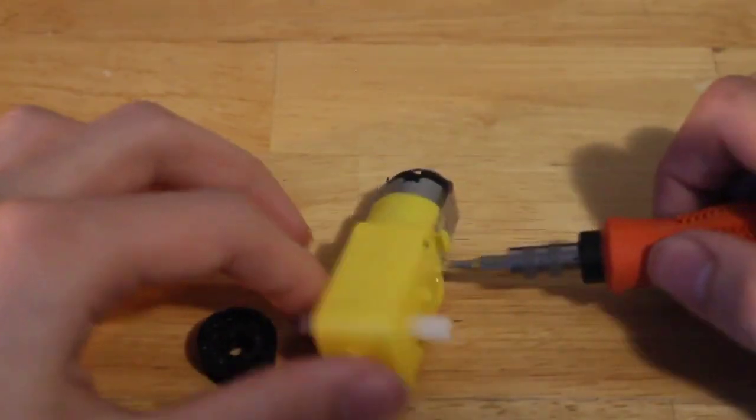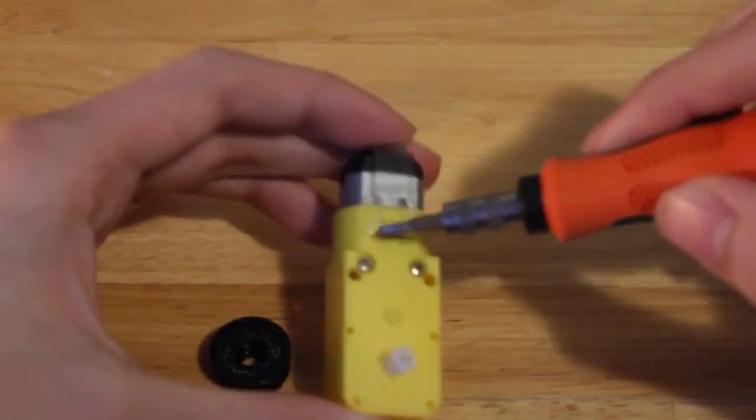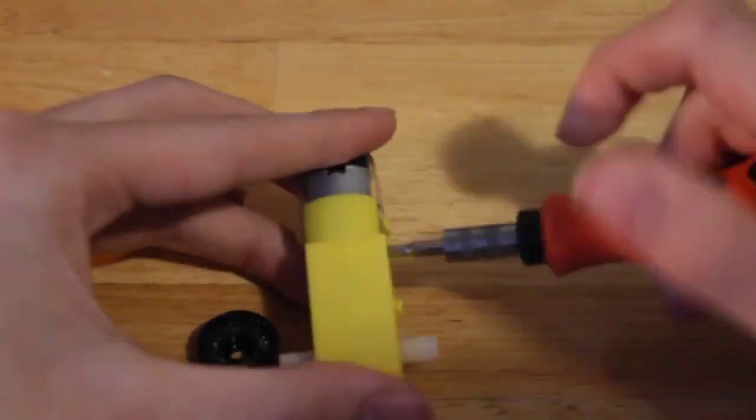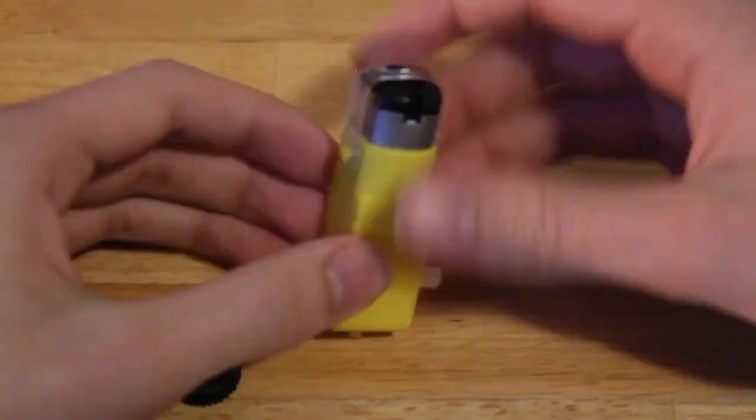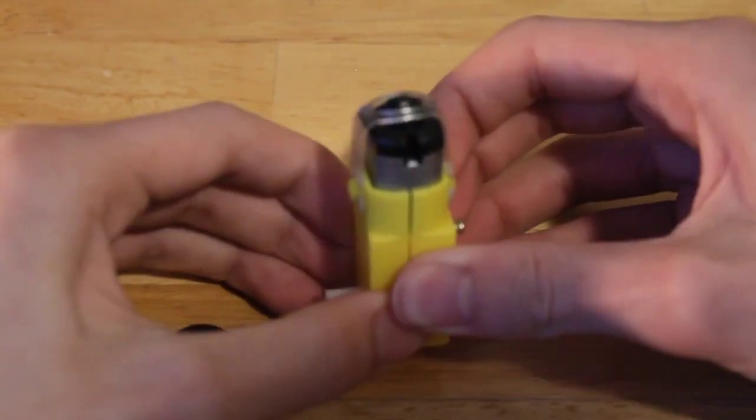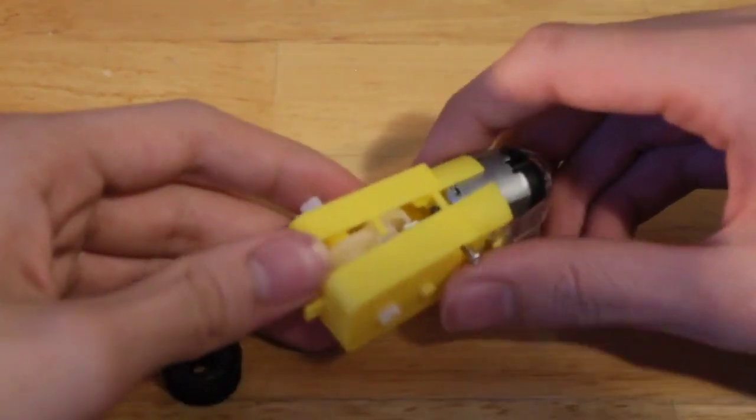First thing you want to do is break open the hobby motor. So you're just taking out these two screws. After you've done that, you're going to slide open the casing. Try to be careful so the gears don't fall out everywhere.